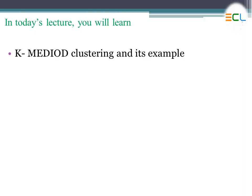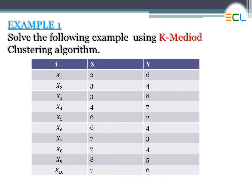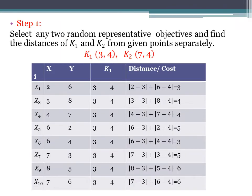In today's lecture, students will be able to learn about the working of the K-medoids clustering algorithm with a solved example. Let's start with example one. We have a dataset in which we have 10 samples and two attributes, x and y. Here, what we have to do is make clusters using this dataset using the K-medoids clustering algorithm.